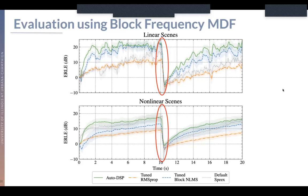We benchmark our model against three baselines: two relatively simple optimizers — RMSprop and block-normalized LMS — where we've grid-search tuned the parameters on the validation set, and the Speex acoustic echo canceler in its default configuration. We can see performance in both linear and non-linear scenes. The AutoDSP learned optimizer typically outperforms the other optimizers not just in early convergence, but also after the scene change — which is particularly surprising since the AutoDSP optimizer was never trained on scene changes, but it still displays remarkable optimization dynamics after them.